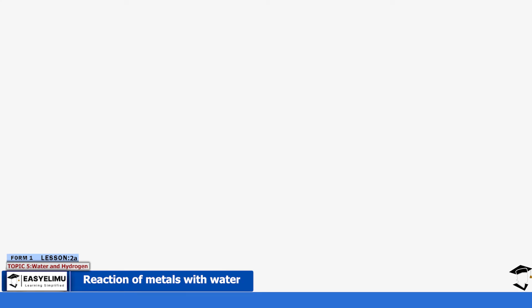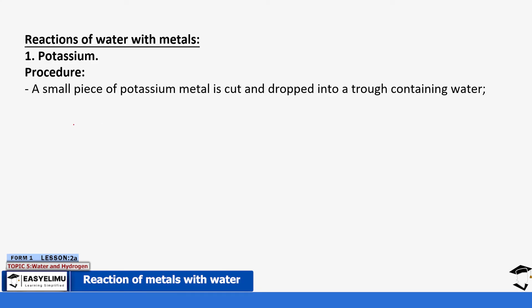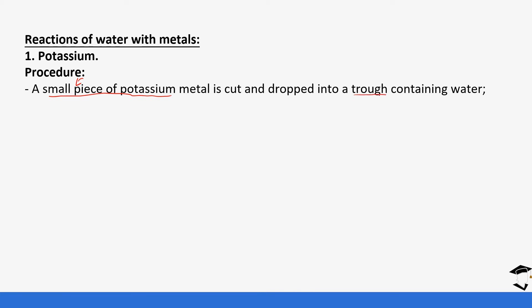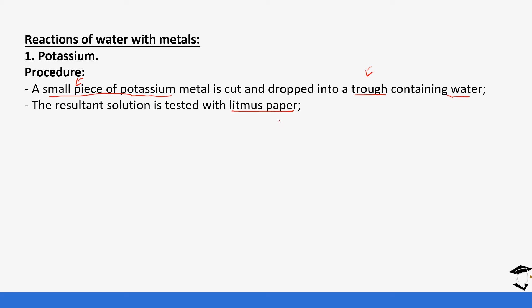We will start with potassium. This is the experiment setup made for potassium. We placed a small piece of potassium and dropped it into a trough — a large container containing water. We are not using a test tube or a small beaker; we are placing it in a trough, and you will see the reason why. After some time, the resulting solution was tested with litmus paper, so we are also going to look at the changes that happen on the litmus paper.